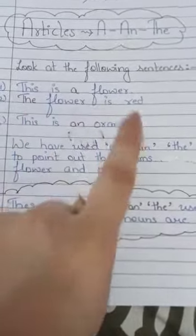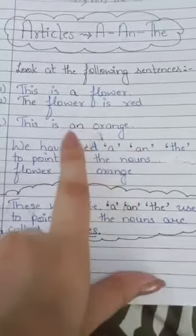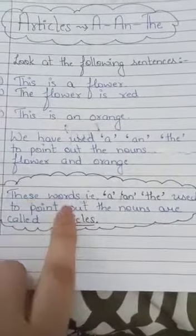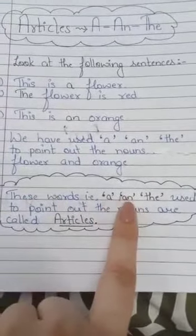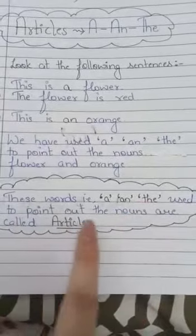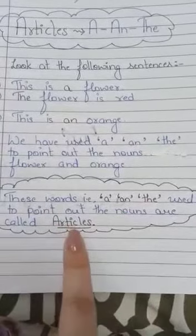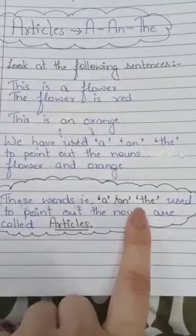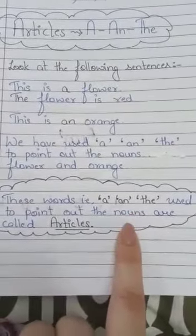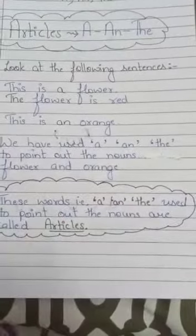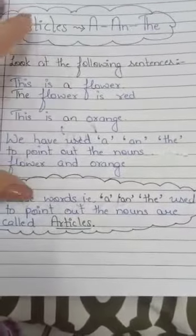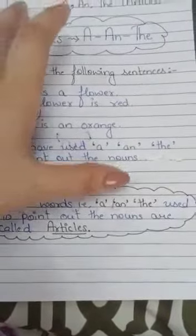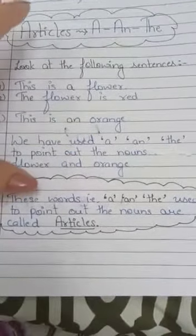These words — 'a', 'an', and 'the' — used to point out the nouns are called articles. These are the words that point out the nouns, and they are called articles.